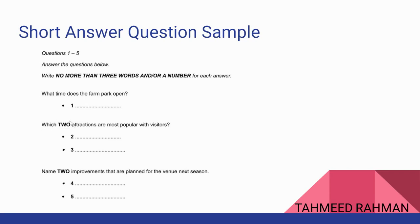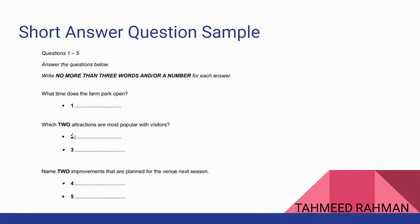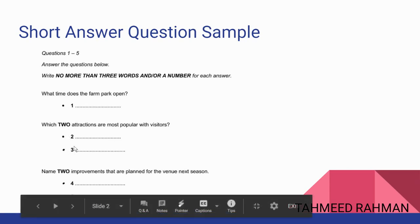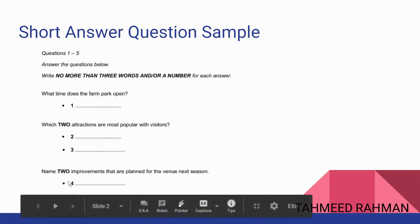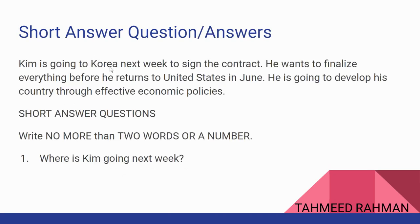The questions might also ask for two answers. In this case, for each of the questions given — number two and number three — you can use three words, and for number four and number five you can also use three words. So make sure you read the instruction carefully before you start.